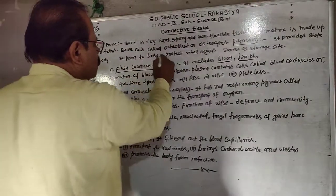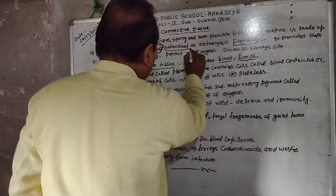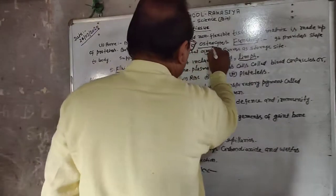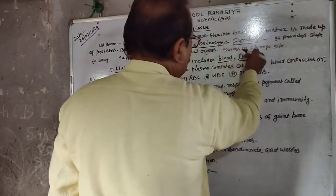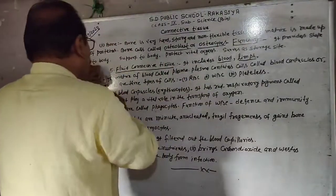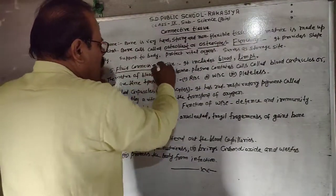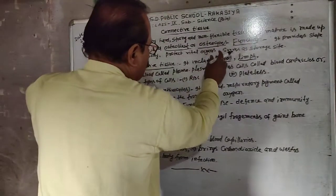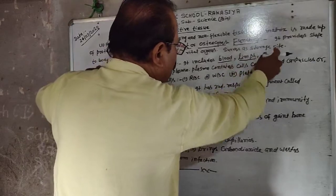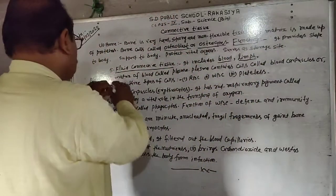Bone cells are called osteocytes. It provides safety to the body, support to the body, protects vital organs, and serves as a storage site.